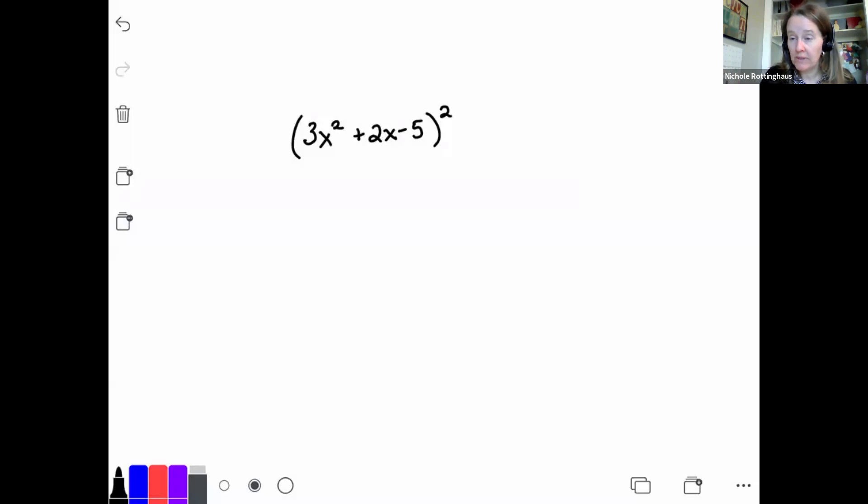This first one is a trinomial that is being squared. I'm raising that trinomial to the second power. Remember, when we raise something to the second power, it means we're multiplying it times itself. So this is equal to 3x squared plus 2x minus 5 times 3x squared plus 2x minus 5. So I'm multiplying that polynomial times itself. Now we just follow the rules from yesterday. I'm going to do this one with the distributive property. So 3x squared times 3x squared is 9x to the fourth plus 6x to the third minus 15x squared. I got the first one done.